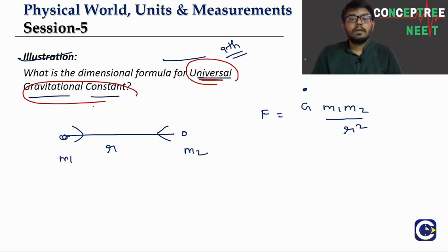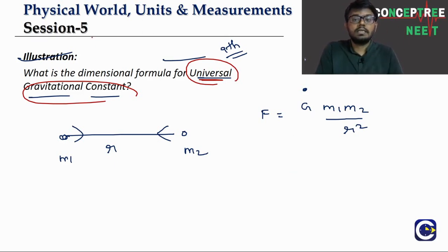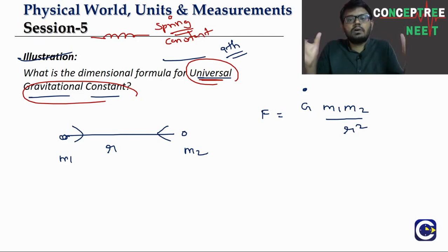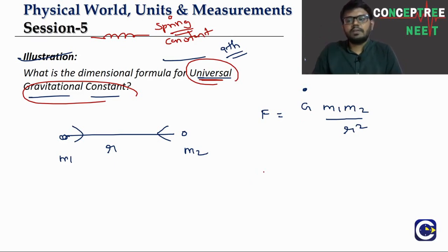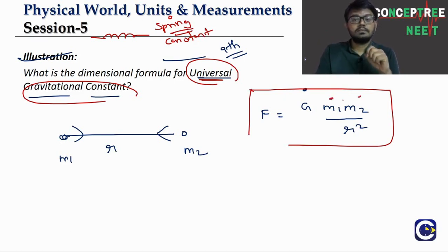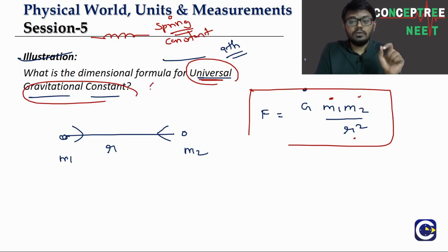In the formula, G is the universal gravitational constant. It is a constant whose value never changes — it remains always the same. That is why we call it a universal constant. We have to find the dimensional formula for G. In the formula, we already know the dimensional formula of force, mass, and R (which is a distance).